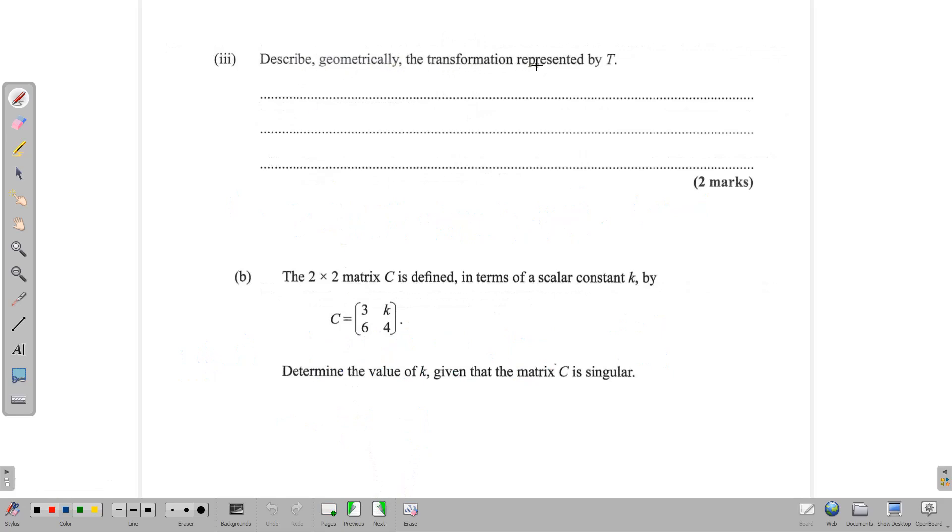Part three asks us to describe geometrically the transformation represented by T. Remember we said T was negative 1, 0, 0, 1. Many students try to memorize these, and some memorize them well. I am not one of those persons who can memorize these things easily because they're so close to each other. So what I normally do in an exam situation like this is look at the matrix, try it out on something and see what it does. Let's set up a small grid and write a point here and call this point 2, 3.